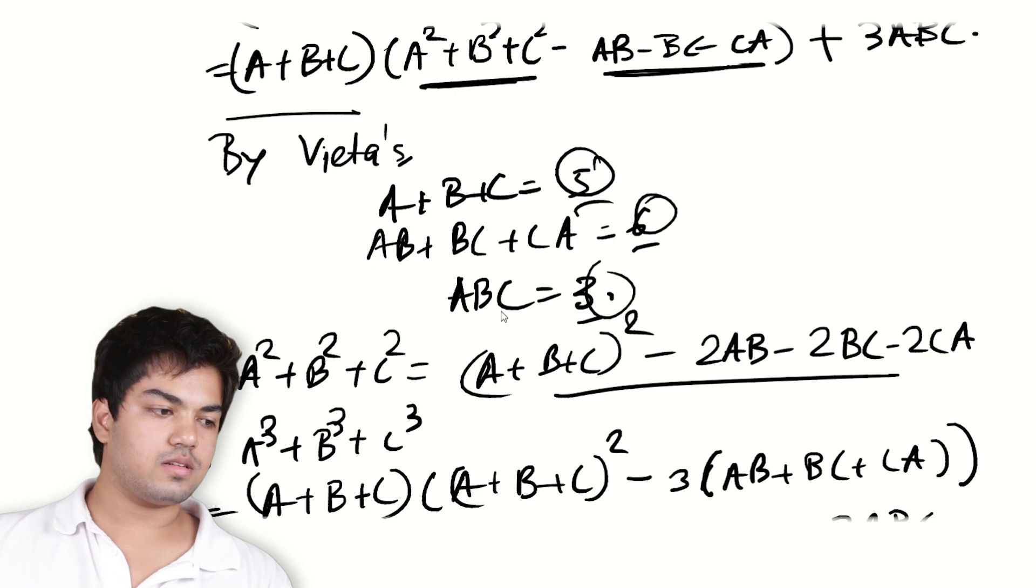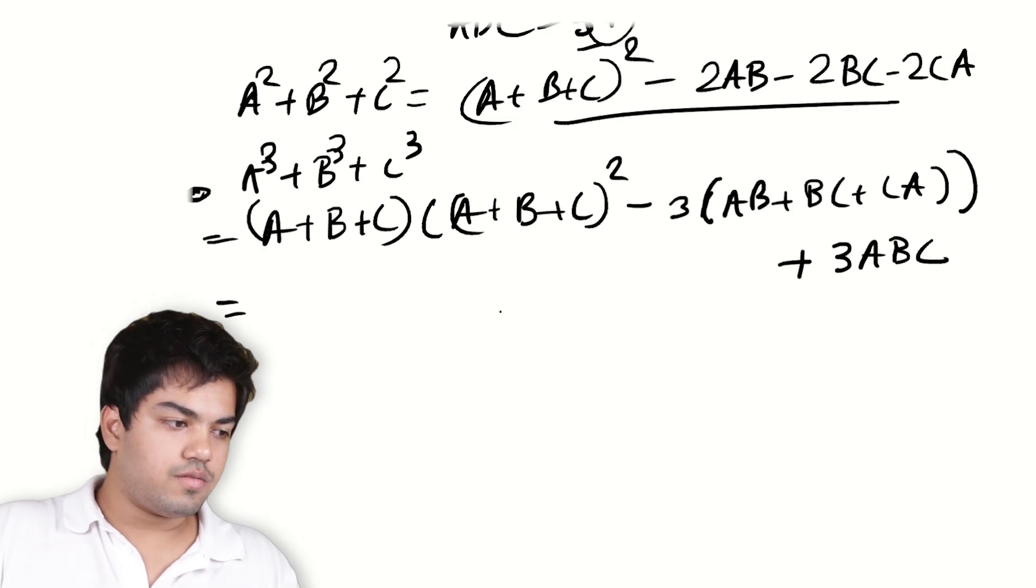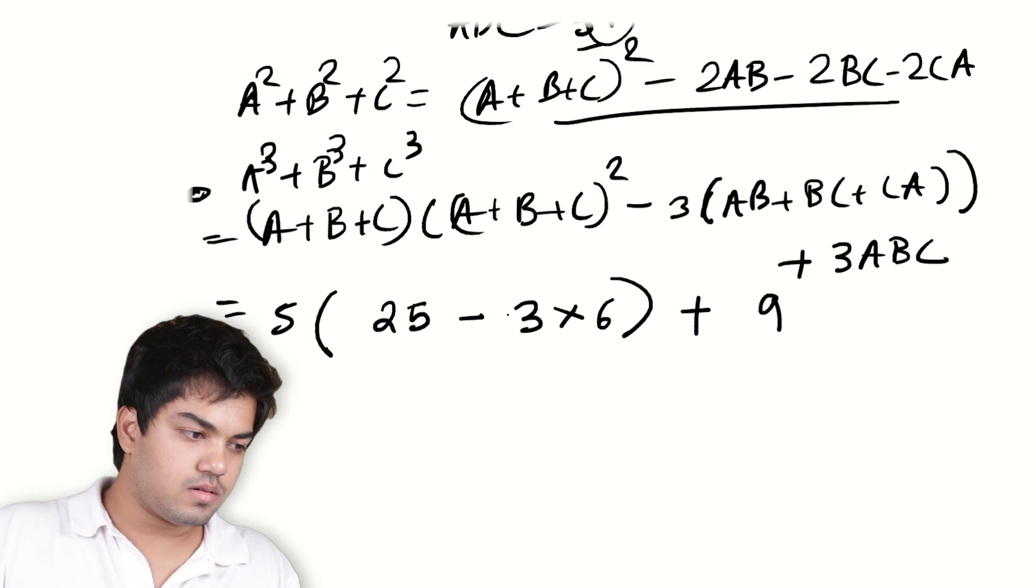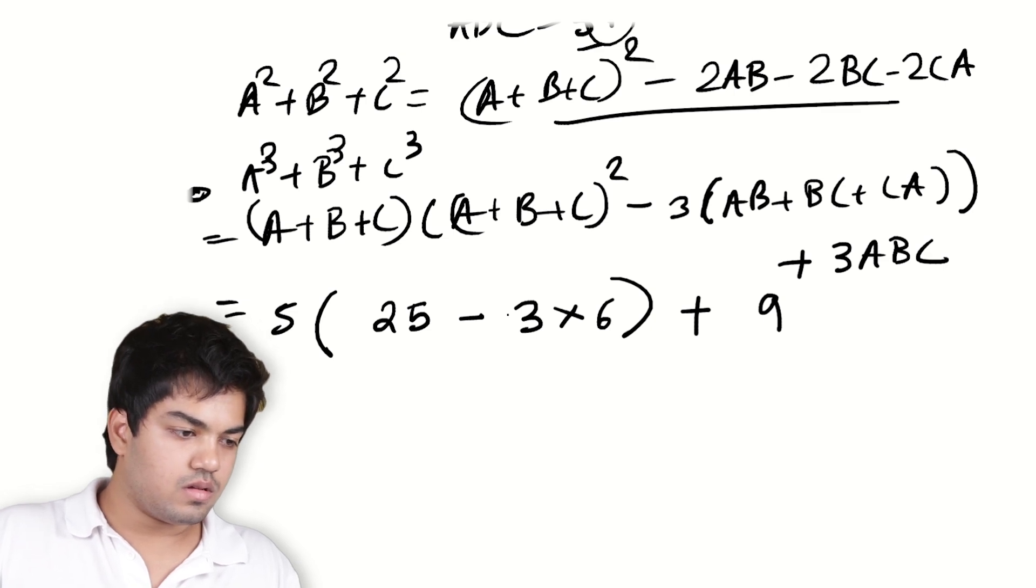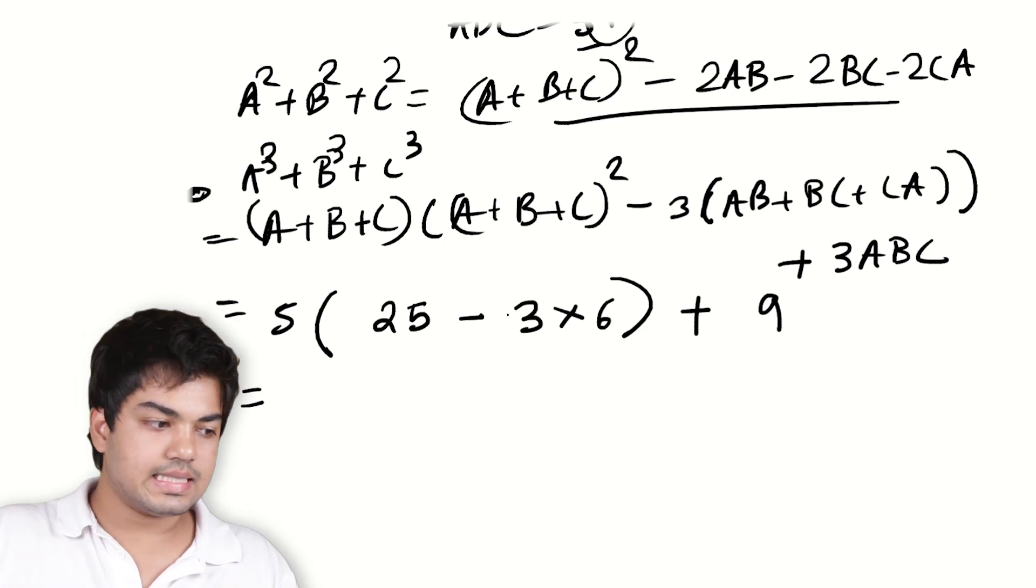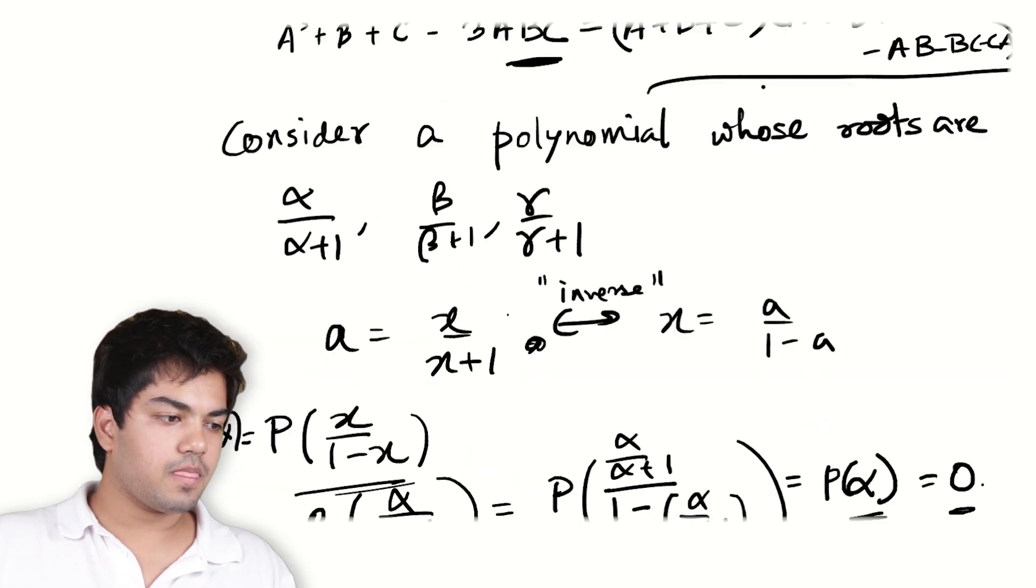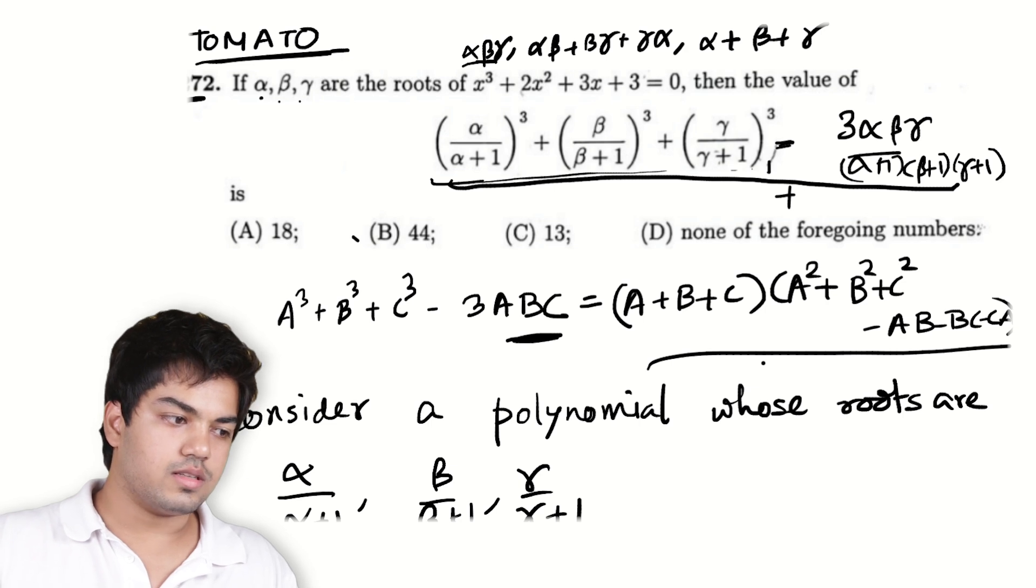So you just plug in these values now. Right? 5, 6 and 3. It's about what is it? 5 into 25 minus 3 into 6, right, plus 9. This is nothing but 3 into 6 is 18, 25 minus 18 is 7, 5 into 7 is 35 plus 9 which is 44, right, which is option B.